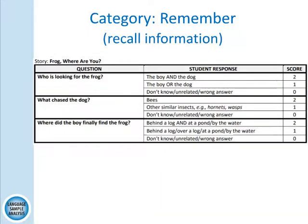Here's an example from the category remember, which is recalling direct information, from Frog Where Are You. Who's looking for the frog? The boy and the dog — you have to have both to get a score of two. If they say the boy or the dog, it's a score of one. What chased the dog? The bees — other similar insects are a one. Where did the boy finally find the frog? Behind a log and at a pond or by the water — if he just says behind a log or at the pond, that's only a one.